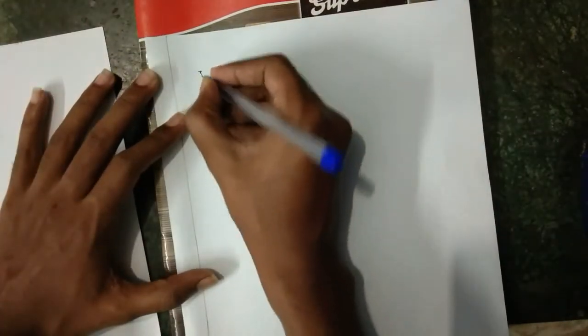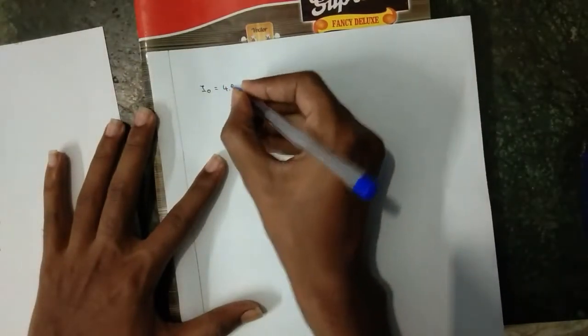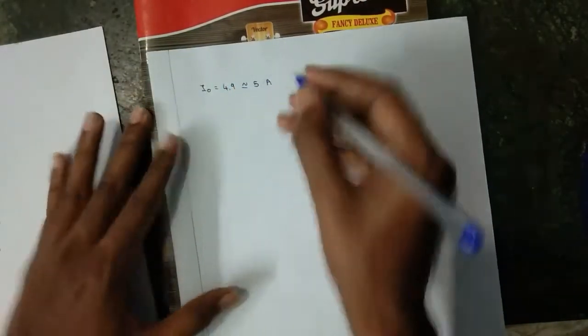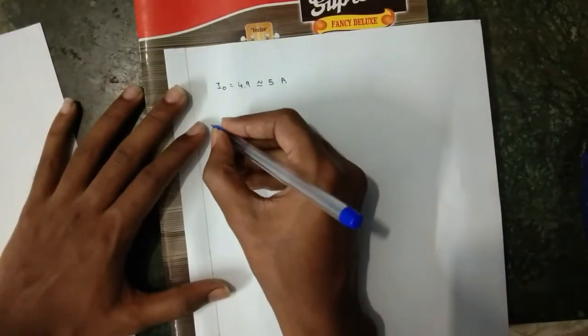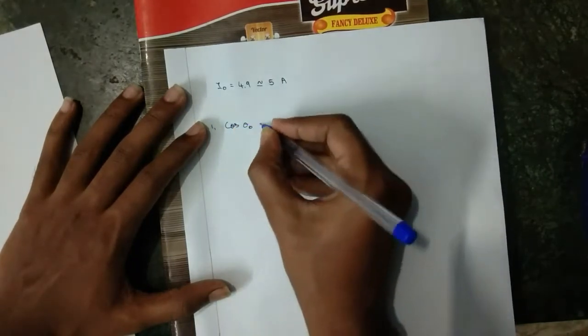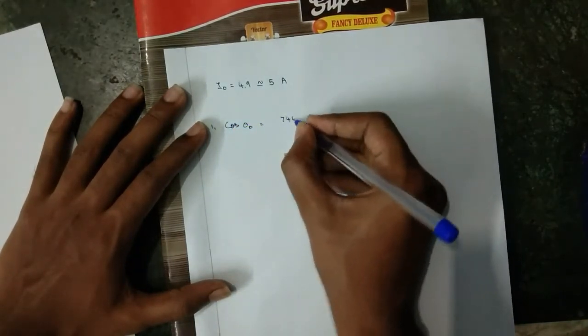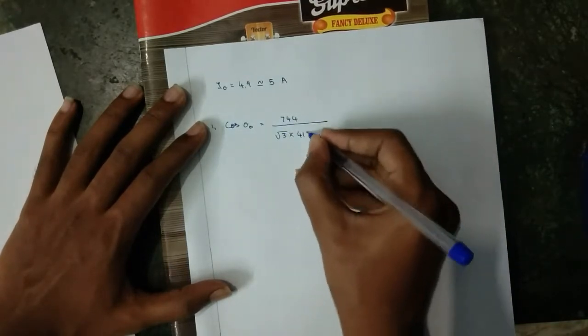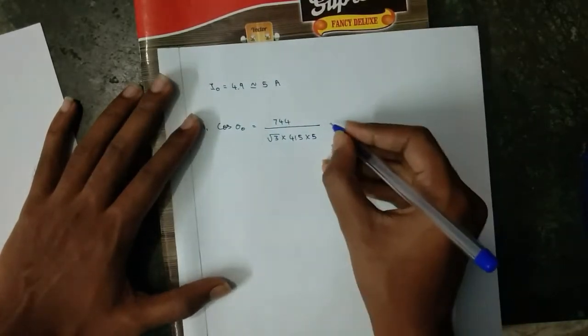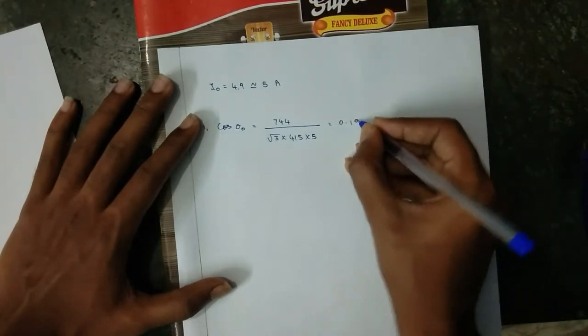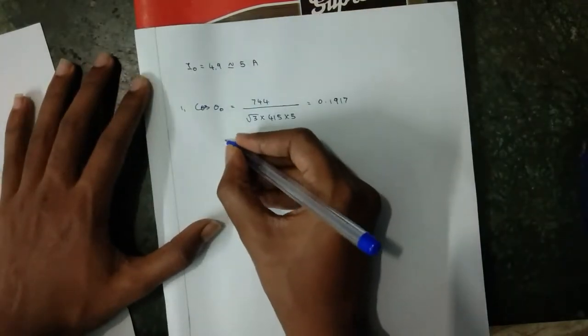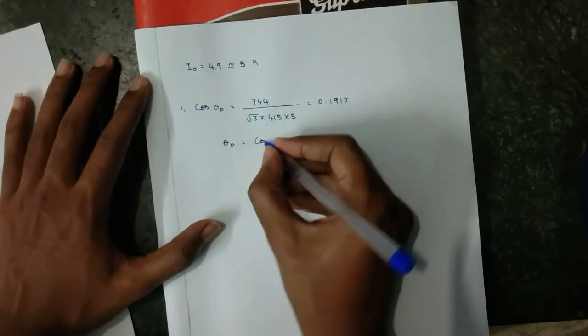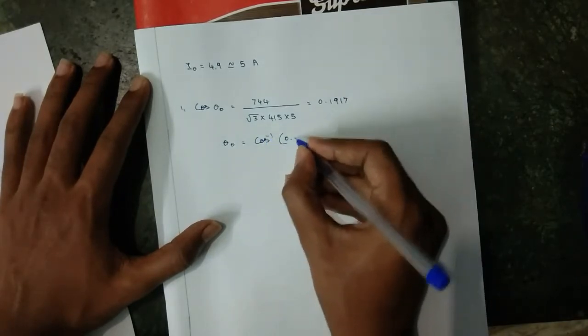First, initially I am taking I_not. I_not is 4.9, I am approximately taking it as 5 ampere. Now I'm going to calculate cos theta_not, which is equal to W_not—that is 744—divided by root 3 into 415 into 5, which equals 0.2091917. Taking cos inverse of this value, we can get the theta_not value.